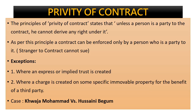Exception number one: where there is an express or implied trust created. A trust is the organization meant for the management of particular property or assets which belongs to others — it manages property belonging to others. In case a trust is created in favour of a person, for example a trust created in favour of a minor, even though that person is not a party to the contract, as a beneficiary of that trust he can enforce the contract.